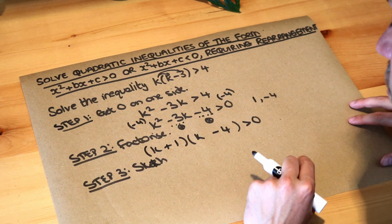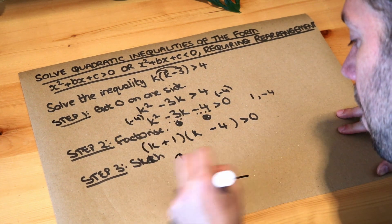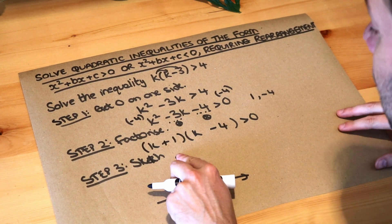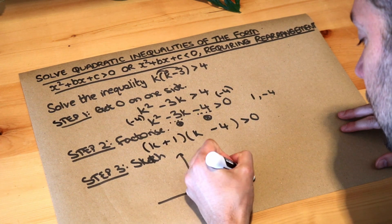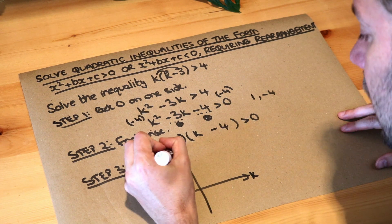We've got the x and the y-axis, but instead of x we've actually got k because it's in terms of k instead. It's got the k-axis and then we're just going to call this the y-axis as before.